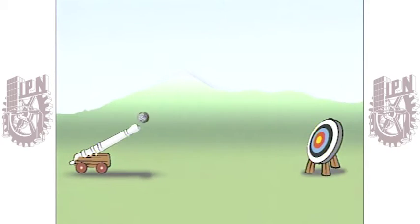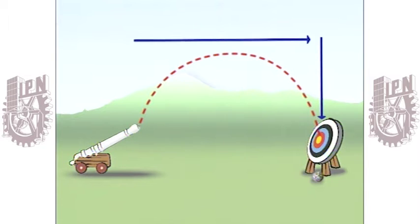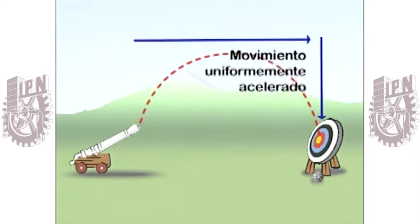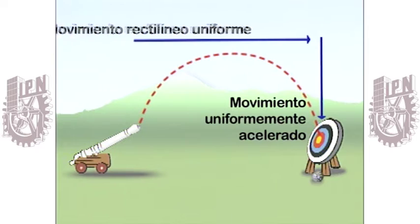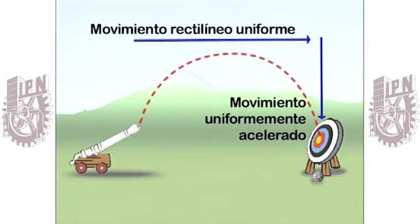Es decir, Galileo afirma que el movimiento parabólico que describen los proyectiles, como el lanzamiento de una bala de cañón, está compuesto por dos movimientos que actúan sobre el cuerpo al mismo tiempo. El movimiento uniformemente acelerado debido a la gravedad en su desarrollo vertical y el movimiento rectilíneo uniforme en su trayectoria horizontal.